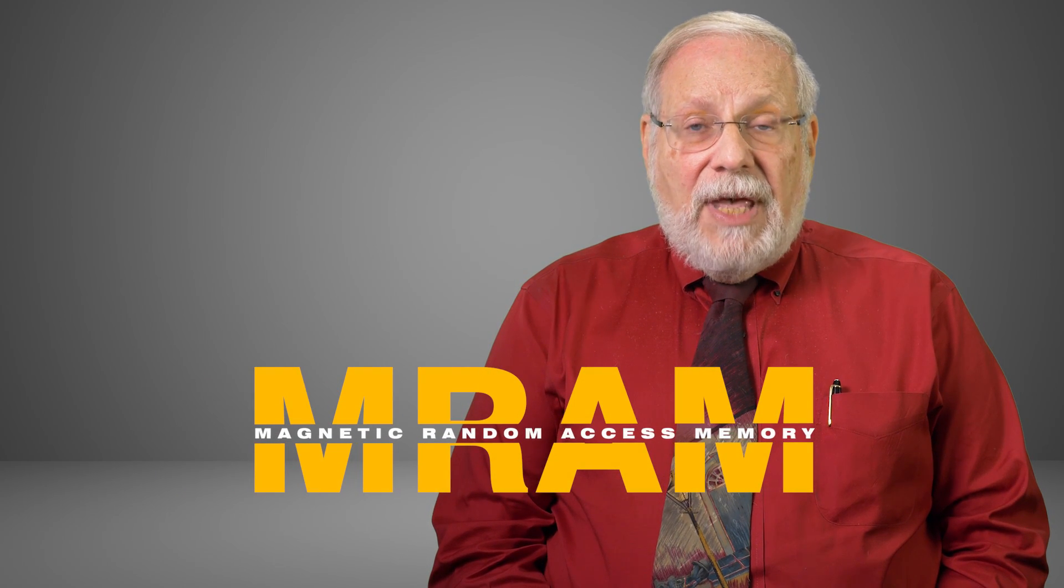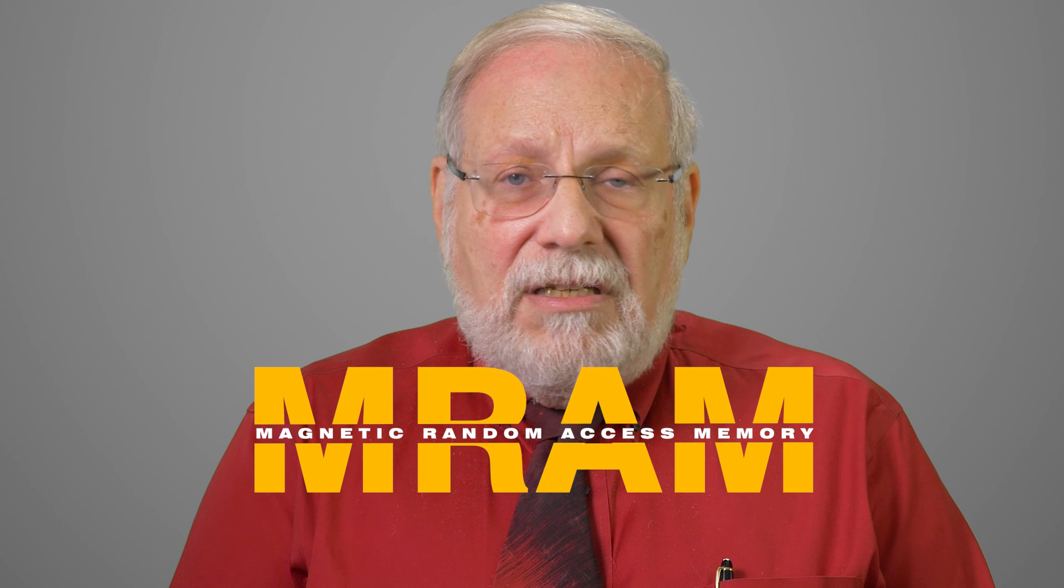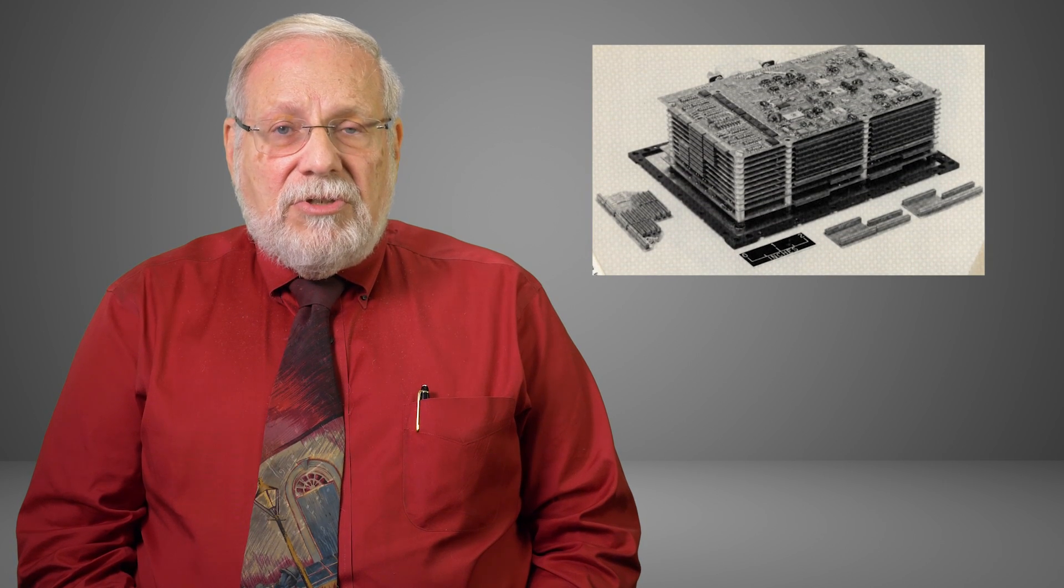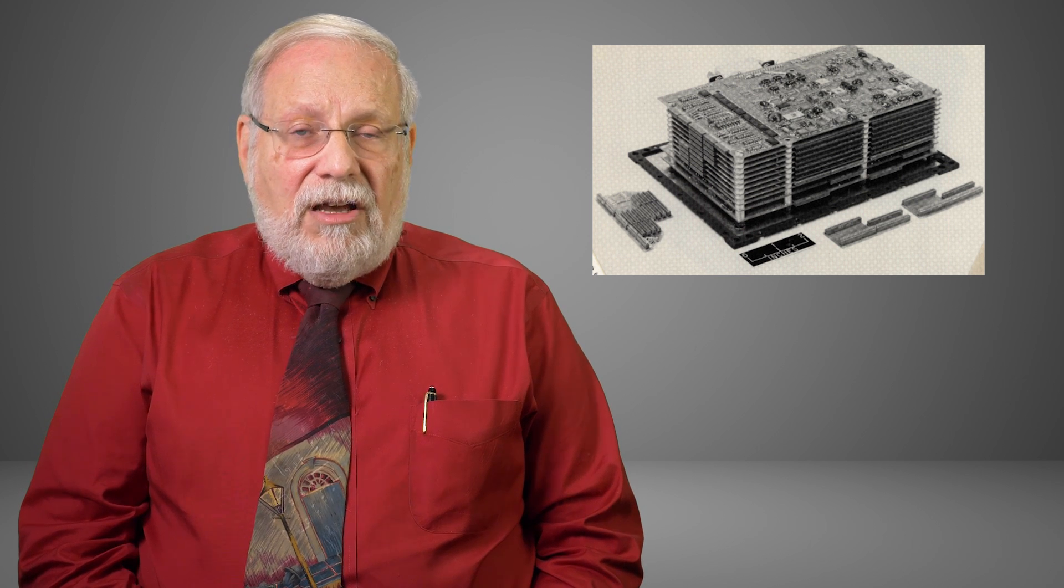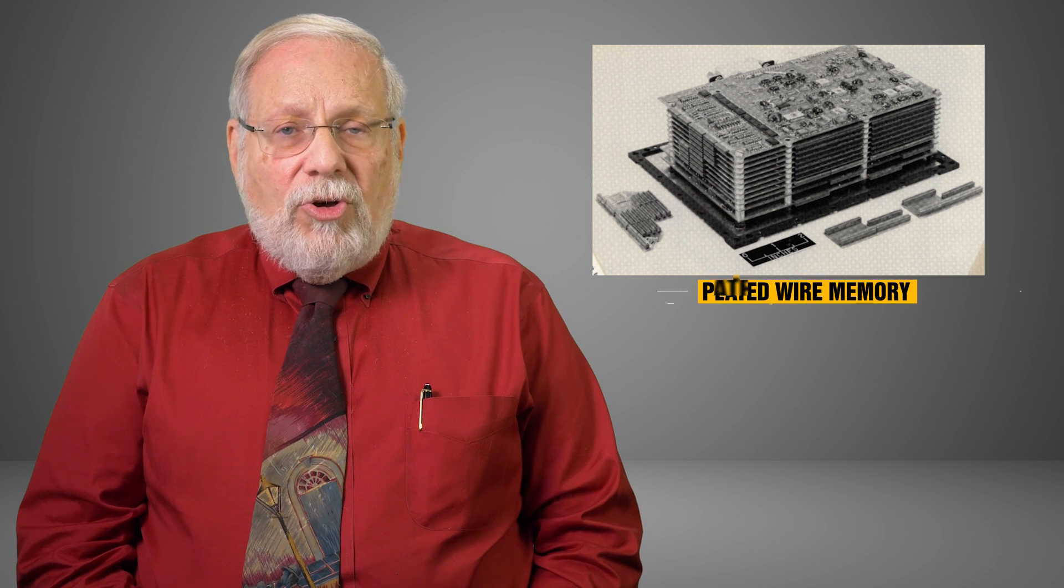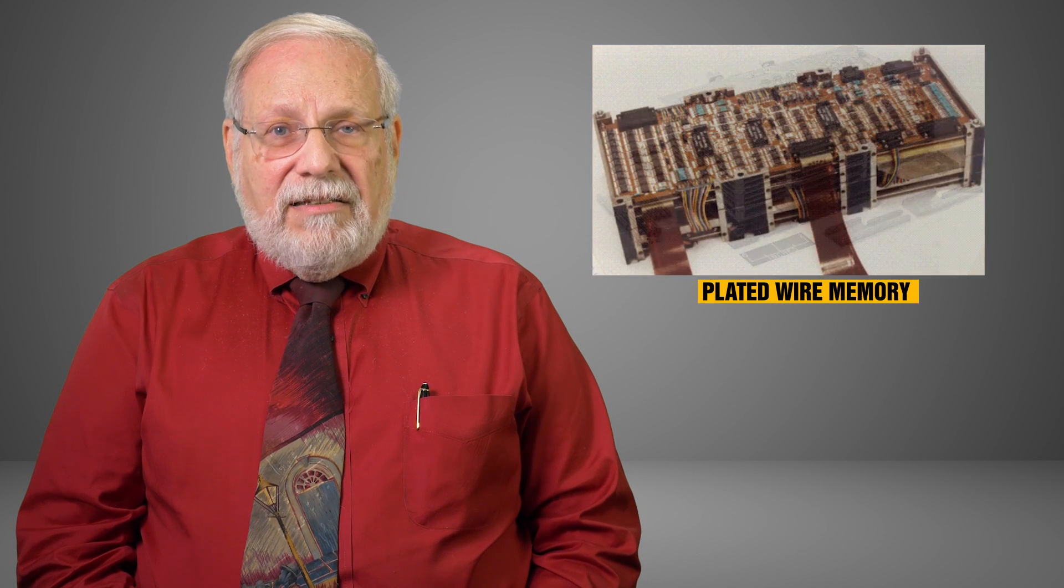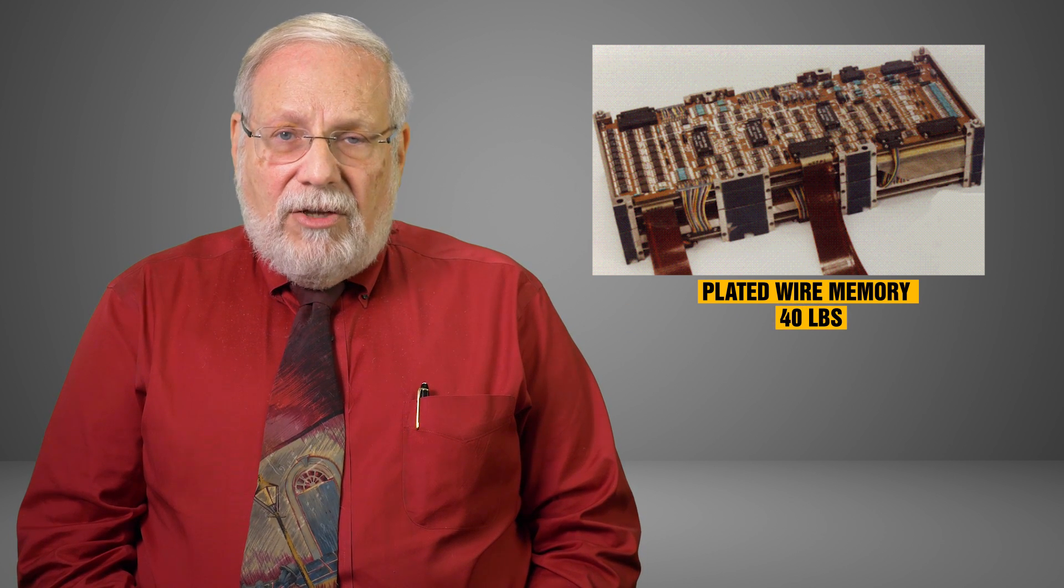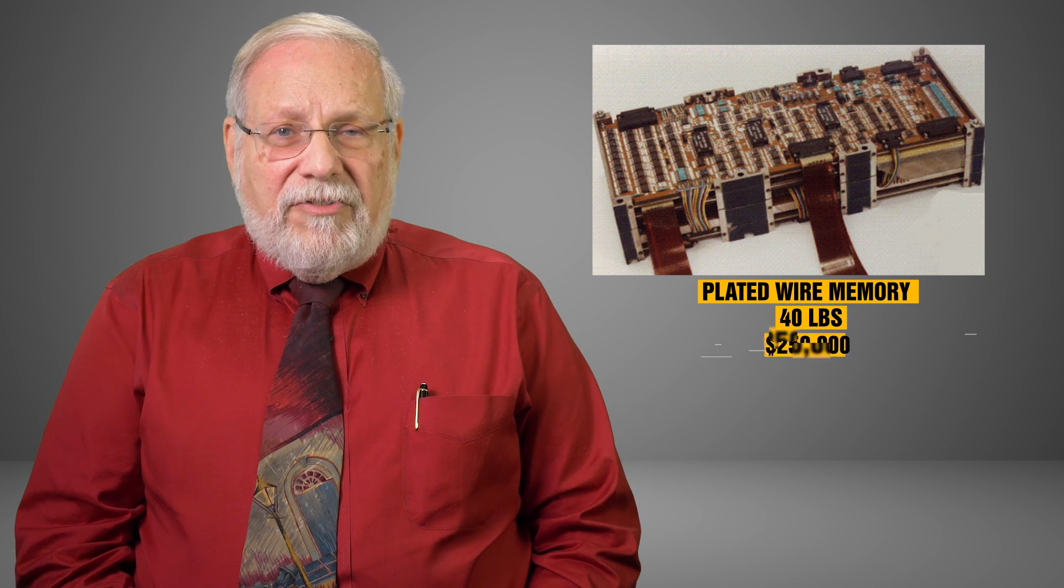The conclusion of that program was that the biggest impact would be in a new type of magnetic memory called MRAM, Magnetic Random Access Memory. The DOD needed a new memory. The memory used on their satellites and missiles was something called plated wire memory, and the typical memory was something like 40 pounds, cost a quarter of a million dollars, and was about 128 kilobytes.